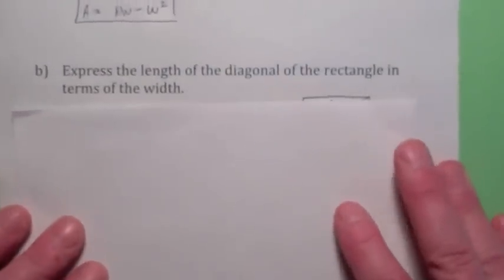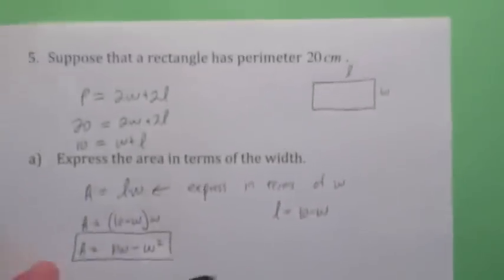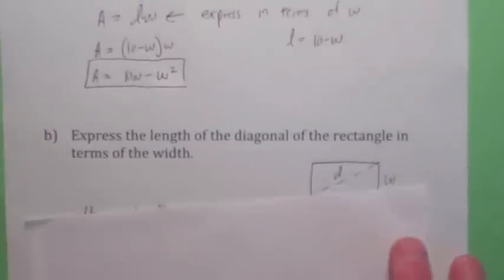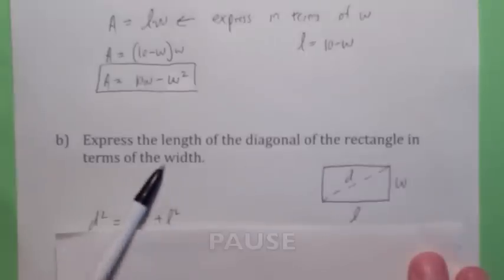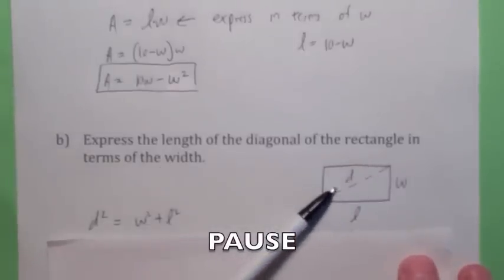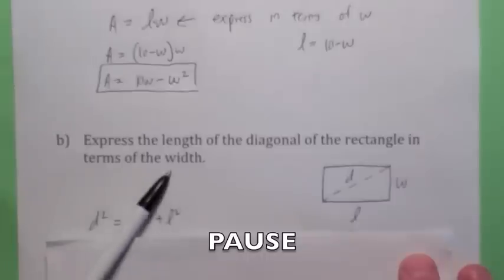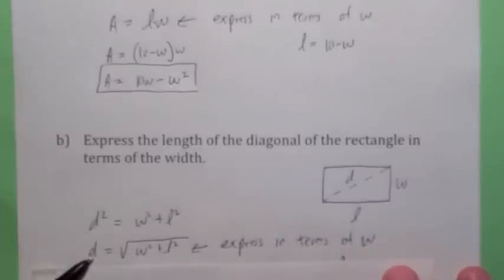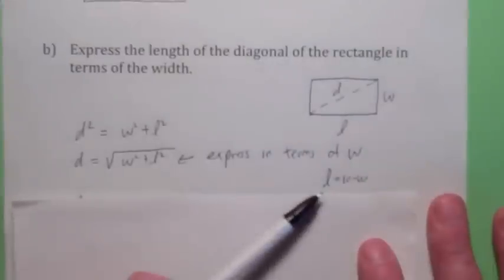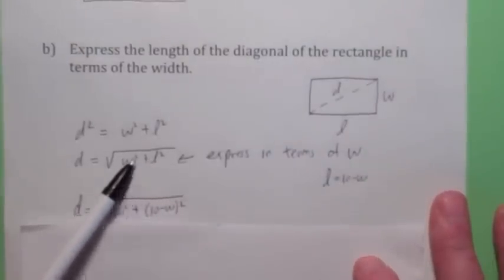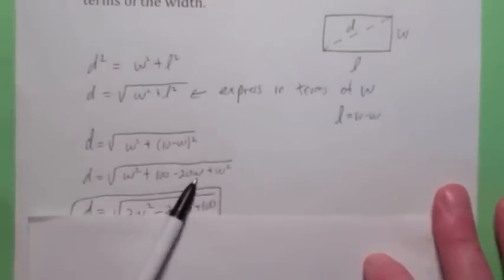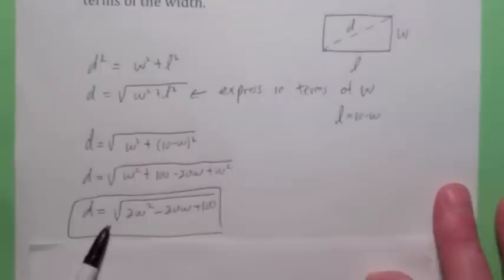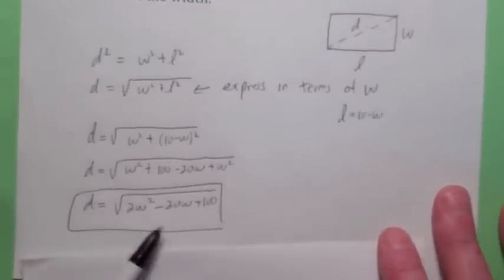Using the same rectangle with perimeter 20, express the length of the diagonal in terms of w. Using the Pythagorean theorem, d equals the square root of w squared plus L squared. To get rid of L, substitute L equals 10 minus w. Expanding gives the square root of w squared plus 100 minus 20w plus w squared. So the final answer is d equals the square root of 2w squared minus 20w plus 100, expressing the diagonal in terms of w.